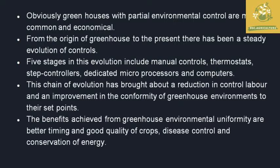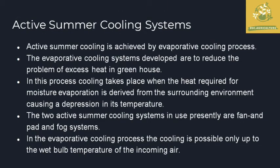Even small farmers can obtain partial environmental control in greenhouses. From the origin to the present, there has been a steady evolution of control measures at each stage of greenhouse development. There are around five stages in this evolution: manual control, thermostats, step controller, dedicated microprocessor, and computers. This chain of evolution brought about a reduction in control labor and improvement in conformity of greenhouse environments. Benefits achieved include better crop timing, good quality crops, disease control, and conservation of energy.